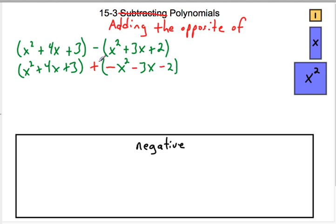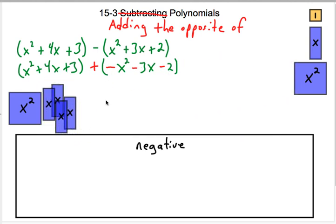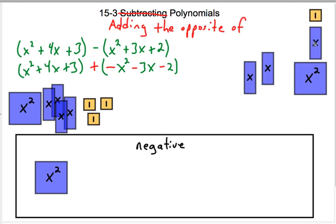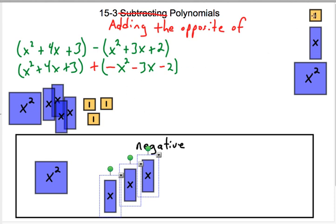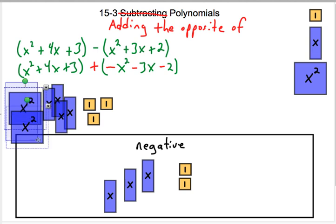Now it just looks like a problem from the last video and we can model it using algebra tiles. So I have an x squared, 4 x's, and 3 ones. And then I have a negative x squared which I can bring down here, a negative 3x I can bring down here, and a negative 2 which I can bring down here. Now when you add those all together, these two positive and negative x squareds cancel each other out.